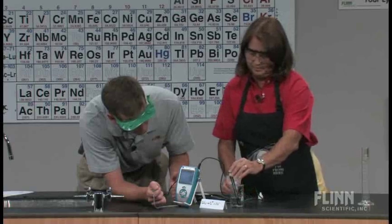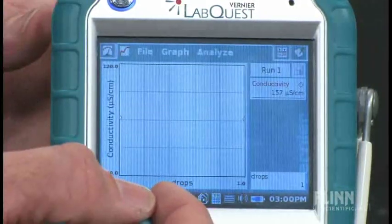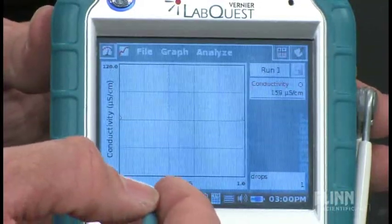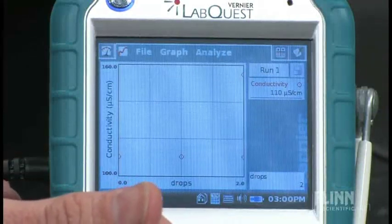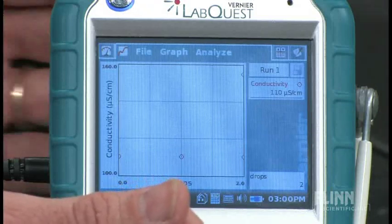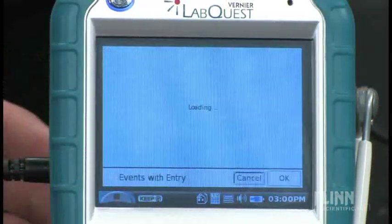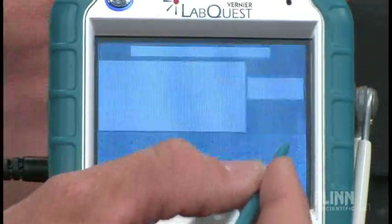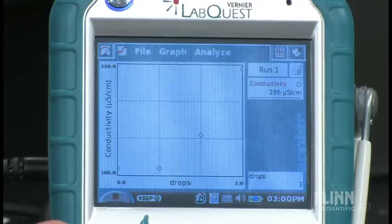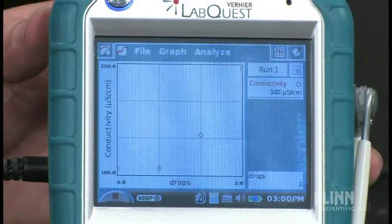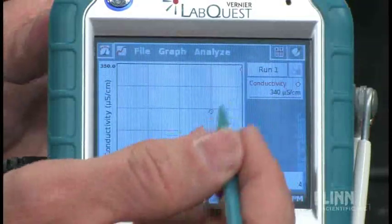And now we're going to put two drops in. A second drop. I'm going to hit the keep on that. So now we have a total of two drops of calcium chloride in there. And we'll go one more drop. And a swirl. And that's three. And then a fourth drop. When the conductivity stabilizes, we hit keep, and we have a fourth drop in there.